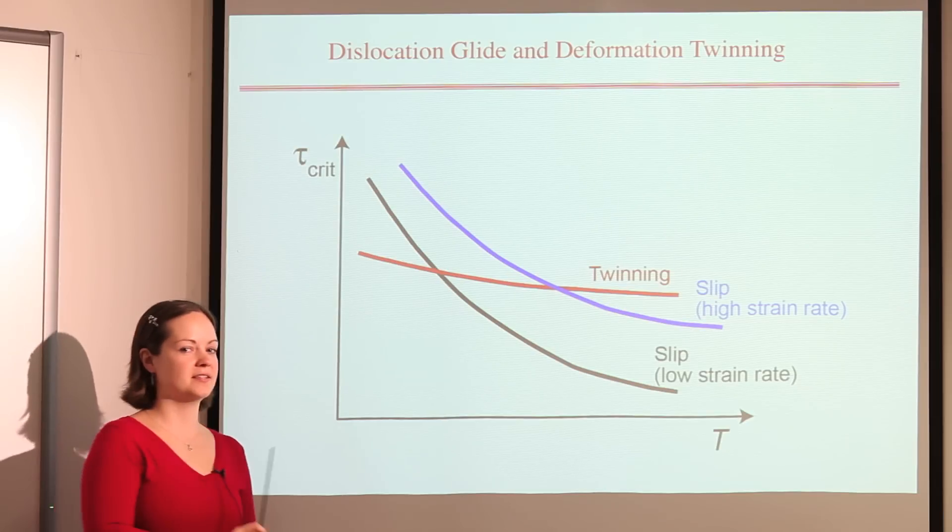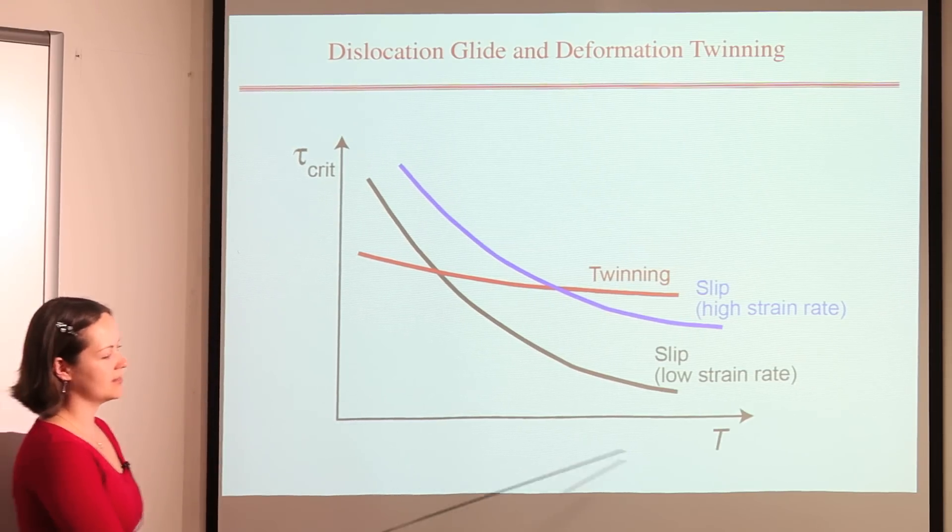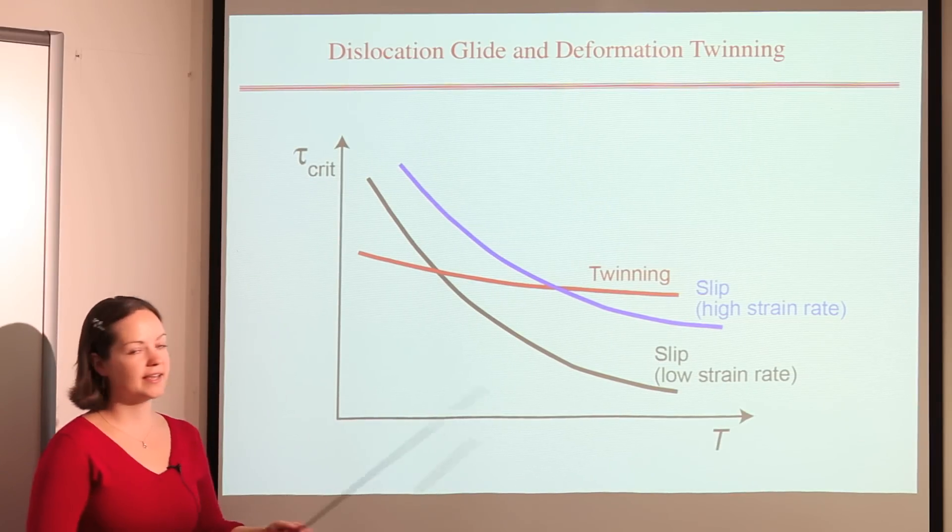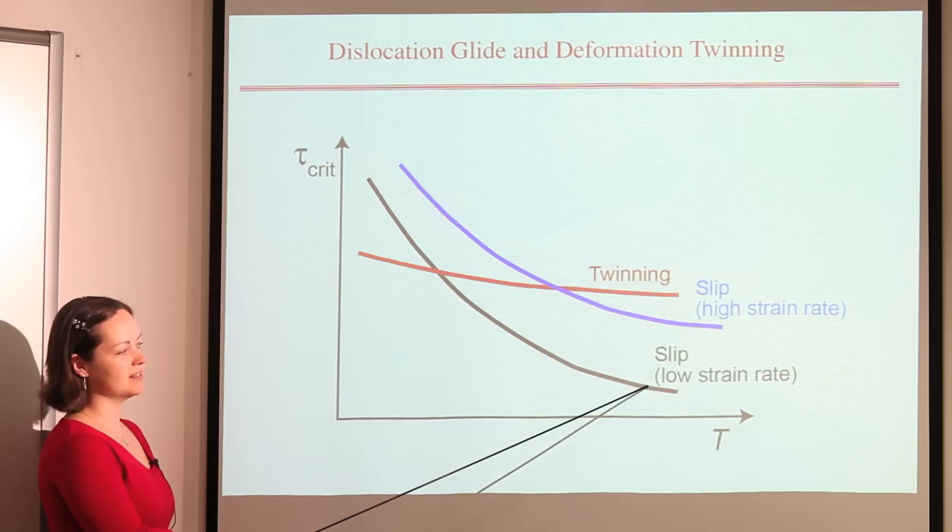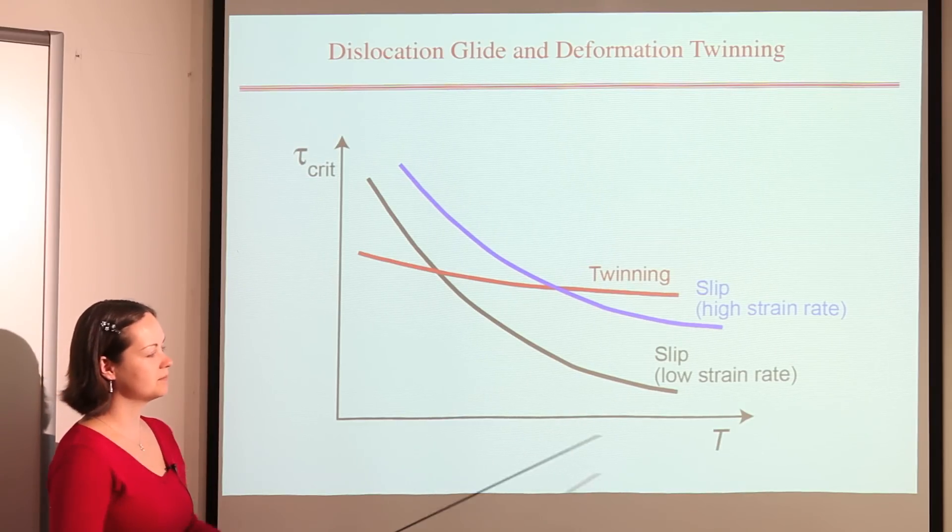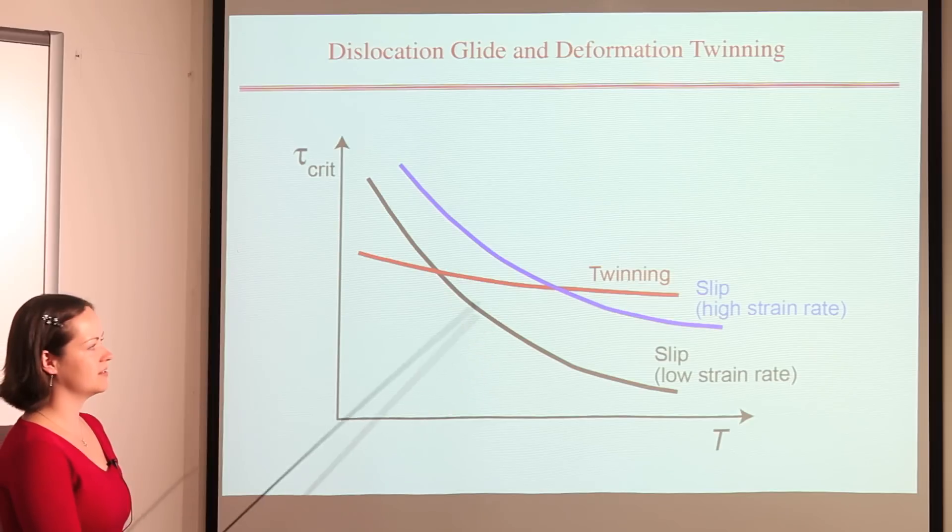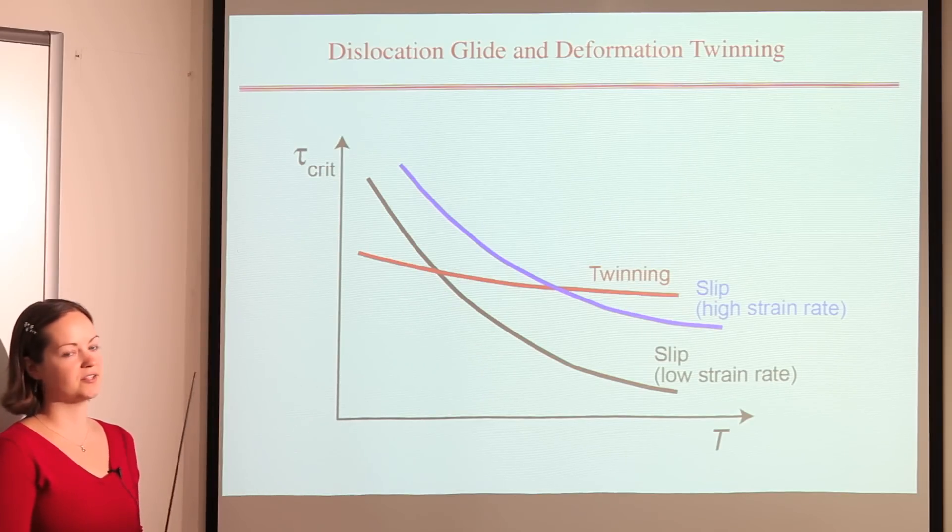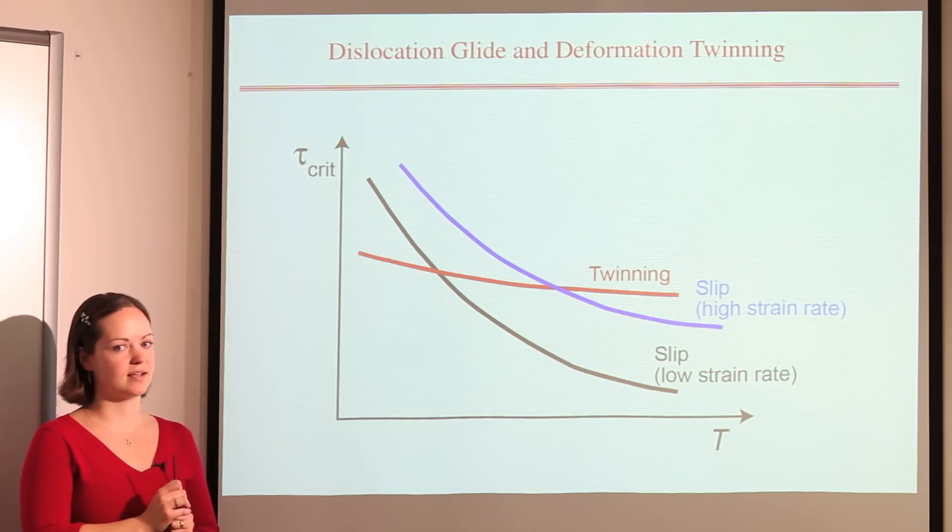This slide plots the critical stress for each type of deformation to occur against temperature. Dislocation motion is thermally activated, so it occurs much more easily at higher temperatures. Twinning, on the other hand, is almost independent of temperature and can also occur at high strain rates. Therefore, twinning tends to be favoured at low temperatures and high strain rates.